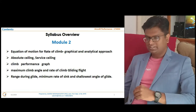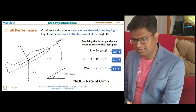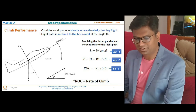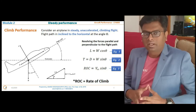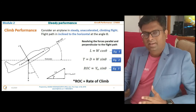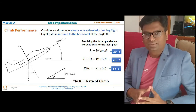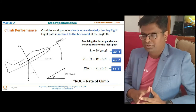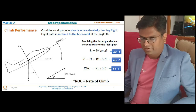Let's begin with the equations of motion for climb performance. We consider an aircraft flying at an angle of attack theta, whose lift is perpendicular to the free stream velocity, thrust is in the direction of free stream velocity, and drag is in the opposite direction. The weight always acts perpendicular to the ground, so the weight is inclined at angle theta with the lift line. Resolving forces parallel and perpendicular to the flight path: Lift = W cos θ (Equation 1), and Thrust = Drag + W sin θ (Equation 2).